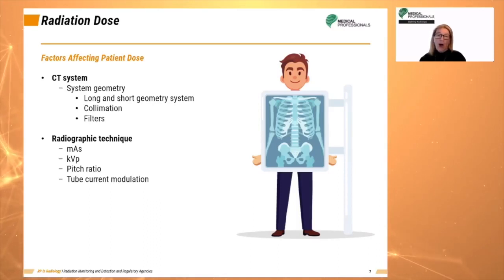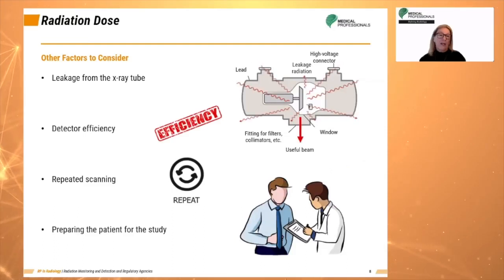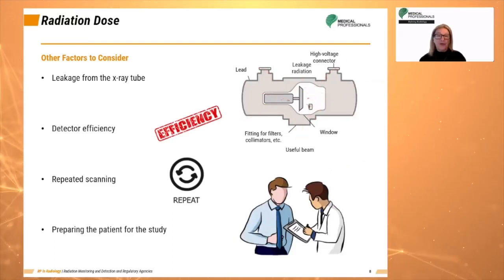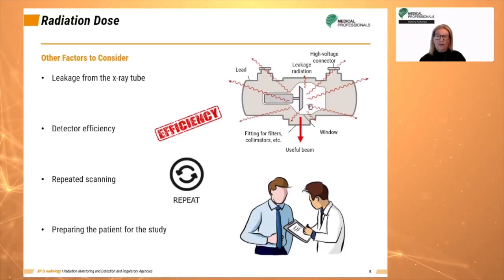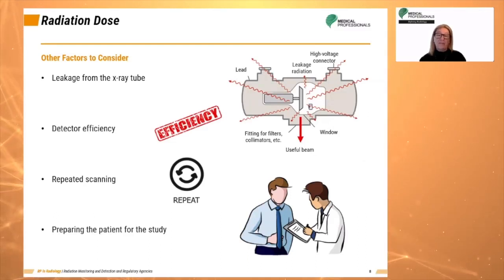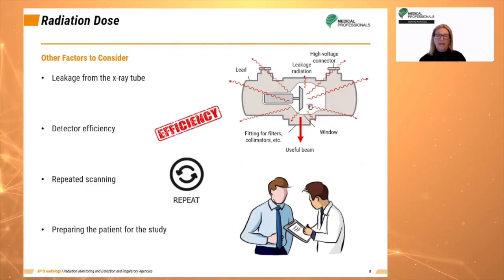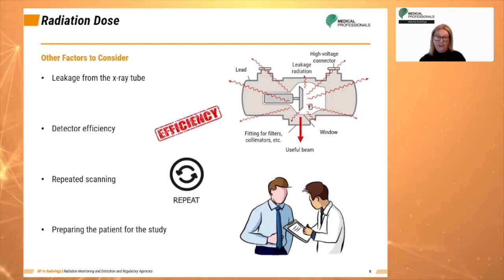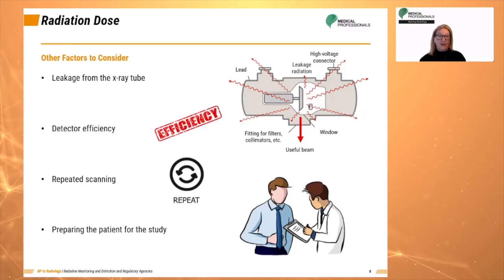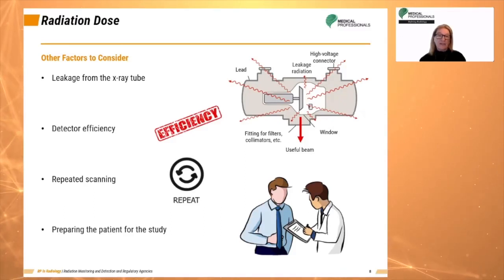Tube current modulation is similar to automatic exposure control used in CR and DR radiography. Other factors to consider include leakage from the x-ray tube — the scanner should be checked and maintained regularly. Checking detector efficiency makes better use of radiation passing through the patient. Repeated scanning due to improper protocol choice should be avoided, and preparing the patient for the study decreases skepticism and increases cooperation.